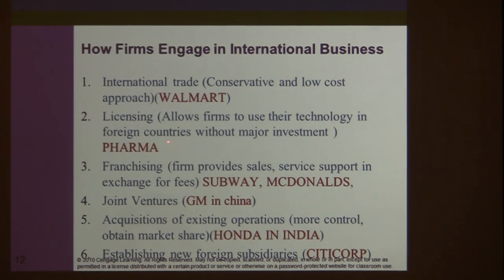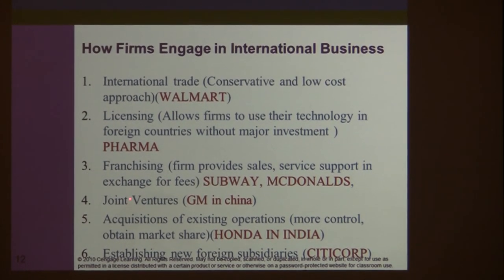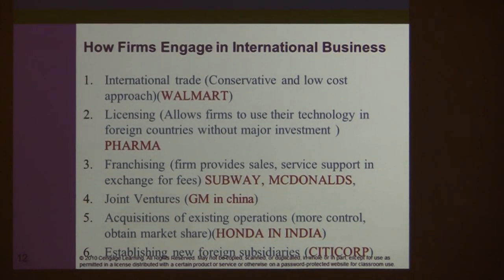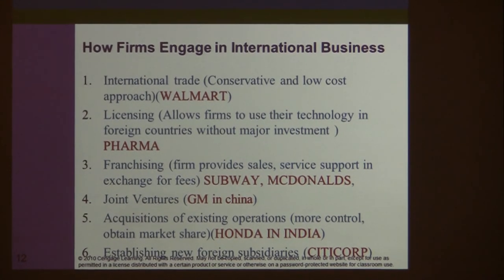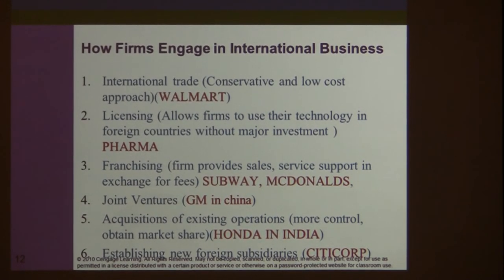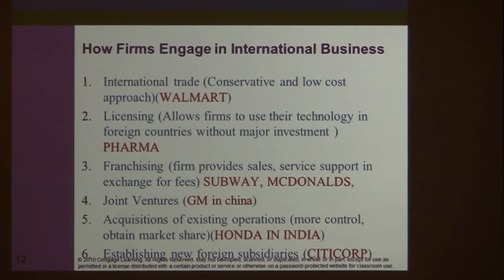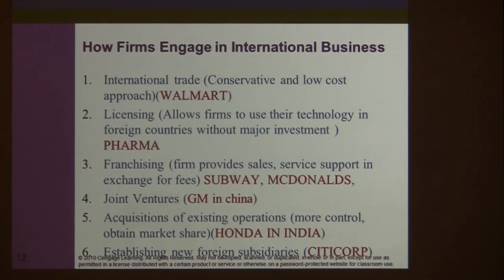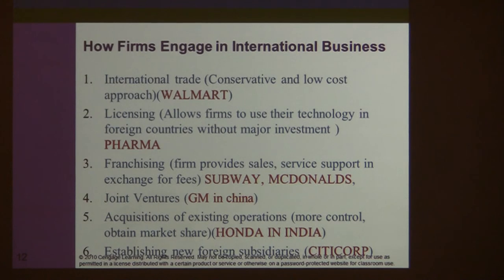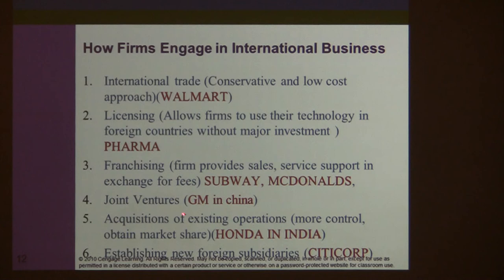The fourth method is joint ventures. For example, Walmart operates in India, GM in China, and Ford in Brazil, often through joint ventures. In China, the government requires GM to have a local partner with a certain ownership stake, and also requires GM to share its technology with the Chinese partner. The risk is that the Chinese partner may use that technology to develop competing products.